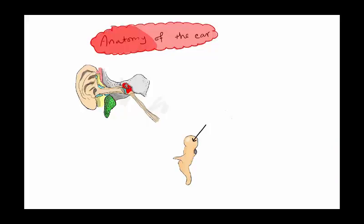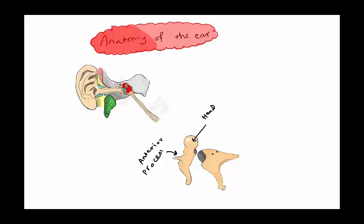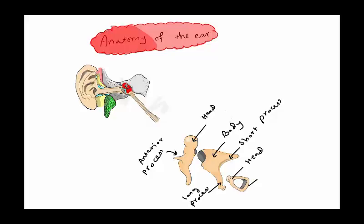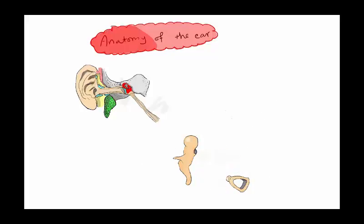Let's talk about each ossicle separately. This is the malleus — this is the head of the malleus, this is the anterior process, and this is the handle of the malleus. And then you have the incus: it has a body, a short process, and a long process. And then the stapes, which has a head and a base.